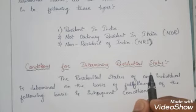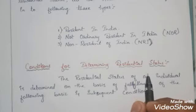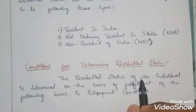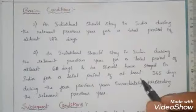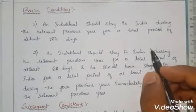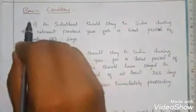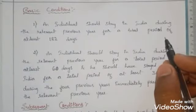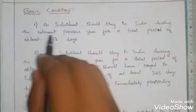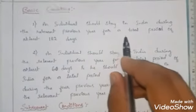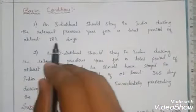There are certain conditions which determine the residential status of an assessee. There are two basic conditions and two subsequent conditions. The first basic condition is that an individual should stay in India during the relevant previous year for a total period of at least 182 days.